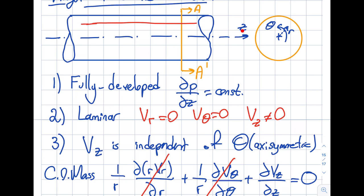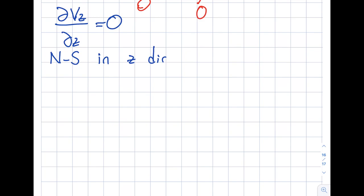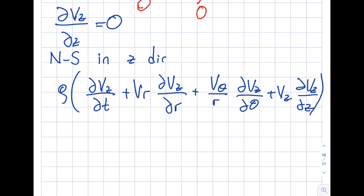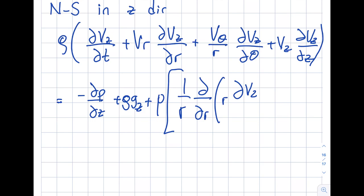This means the acceleration in the Z direction is zero — V_Z is constant in Z, so this will come in handy. Now I'm going to write my Navier-Stokes equation in the Z direction, because that's the flow direction. So: rho(dV_z/dt + V_r·dV_z/dr + (V_theta/r)·dV_z/dtheta + V_z·dV_z/dz) = -dP/dz + rho·g_z + mu·[(1/r)(d/dr)(r·dV_z/dr) + ...]